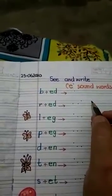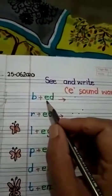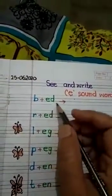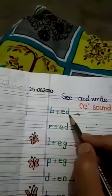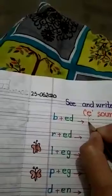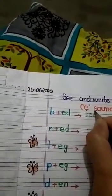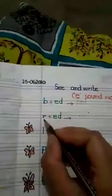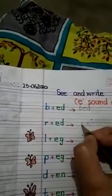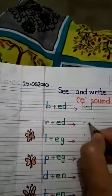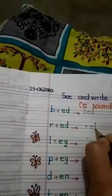Today we will do three-letter words in which the letter E appears. B, E — bed. We will write here B, E, bed. Next is R, E, D — red. Write here R, E, D — red.